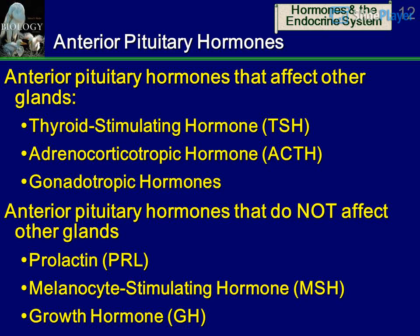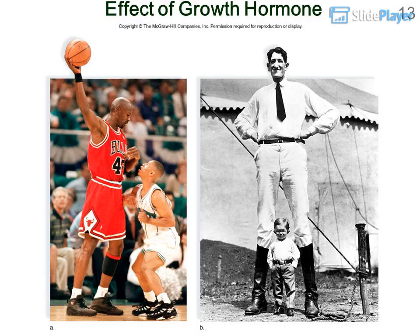Anterior Pituitary Hormones: Those that affect other glands include Thyroid Stimulating Hormone (TSH), Adrenal Corticotropic Hormone (ACTH), and Gonadotropic Hormones. Anterior pituitary hormones that do not affect other glands include Prolactin (PRL), Melanocyte Stimulating Hormone (MSH), and Growth Hormone (GH).